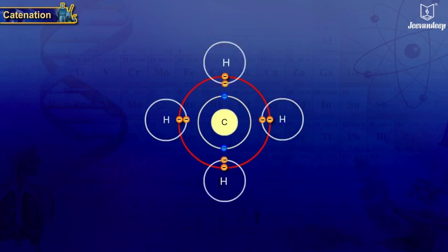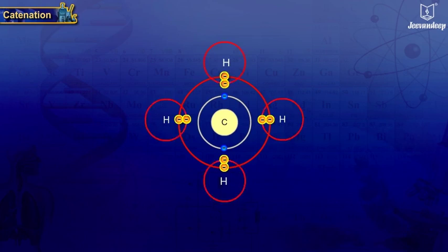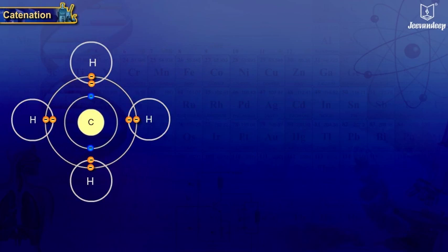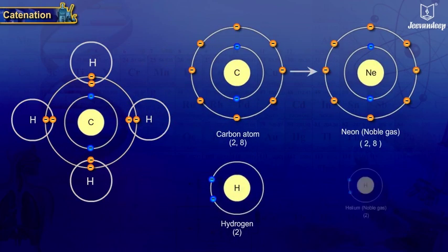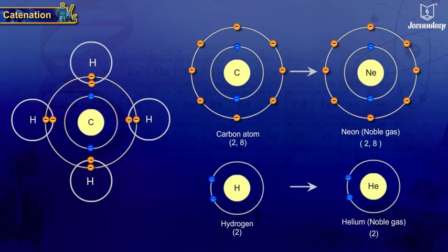The shared electrons belong to the outer shells of both the atoms and lead to both atoms attaining the noble gas configuration, resulting in the formation of covalent bonds. Thus hydrocarbons are abundant in nature.